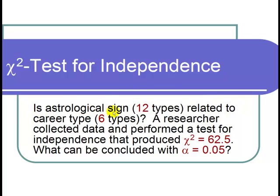Is astrological sign, and there's 12 types of them, related to career type? And we're calling that six different types. A researcher collected data and performed a test for independence that produced a chi-squared value of 62.5.